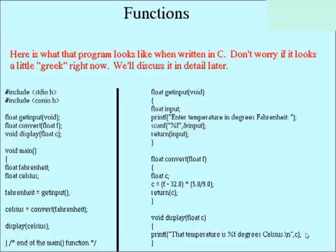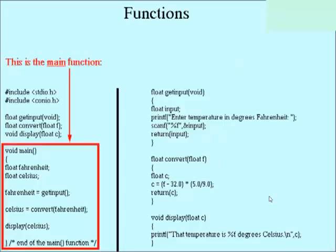So over on the left-hand side, you see the main module, and over here we see the three individual modules that main calls or uses to get the job done. So over here is the main function. We've all seen void main with an empty set of parentheses, so that's our main function.